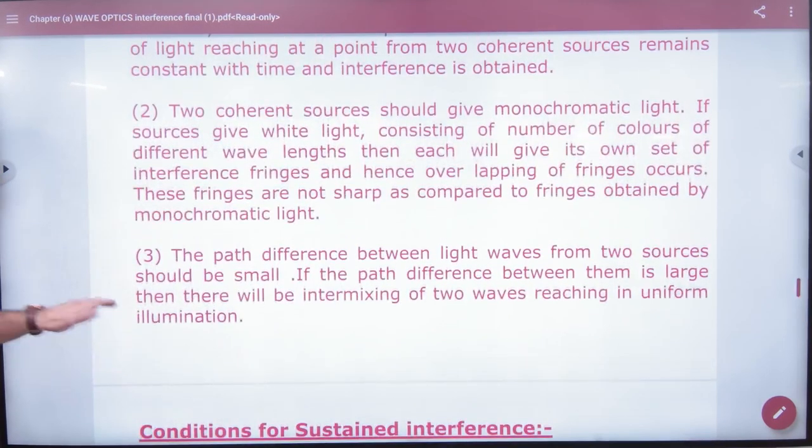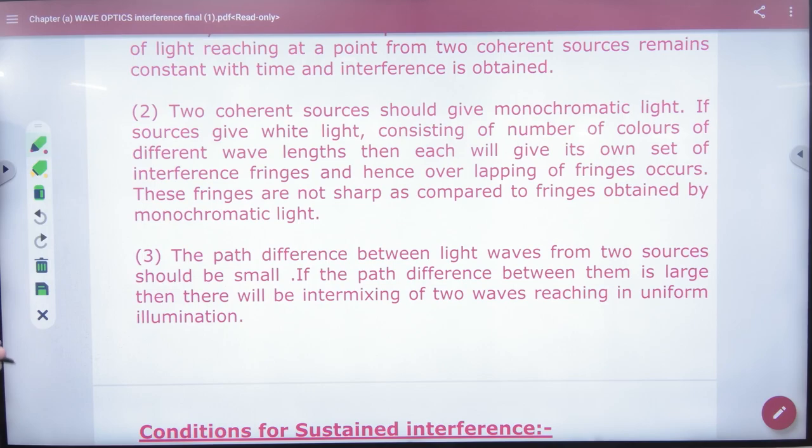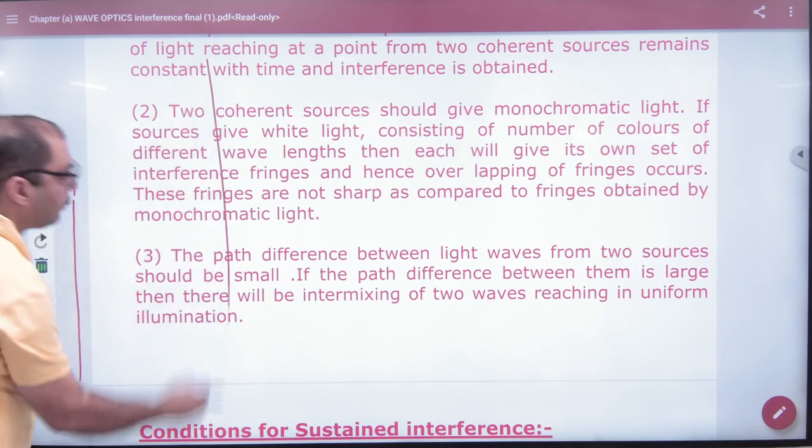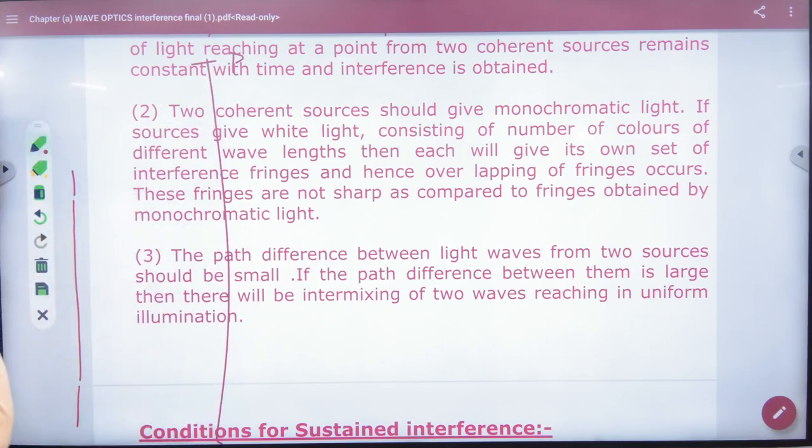Next is, path difference of light waves from two sources should be small. Now the problem is, if path difference is small, this means the experiment shouldn't be done so that one source is here and one source is here, very far. And here is the screen, and the point is here. What will happen?